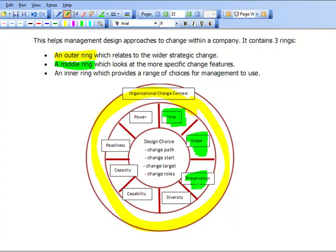Preservation: what do we want to keep? Diversity: what diversity is involved? Capability: what skills and capability do we have? Capacity: what is the capacity for this change? Readiness: how ready are we for this change? And the power: where does the power actually lie?